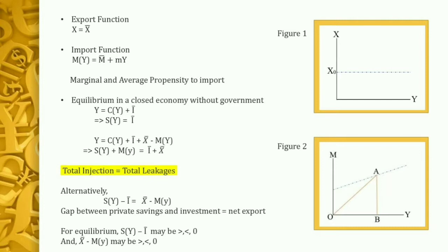From the diagram, we can find the average propensity to import by taking any point A on the import function — the slope of the line OA gives us APM = AB/OB. As Y increases, the slope of any ray from the origin to a point on the import function becomes flatter, so the average propensity to import falls as income increases. This means the marginal propensity to import is less than the average propensity to import.